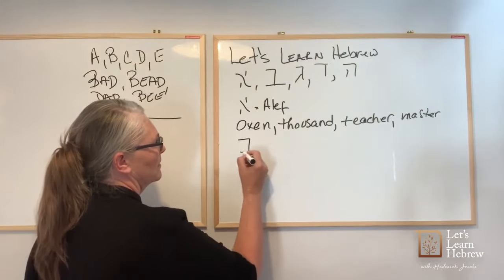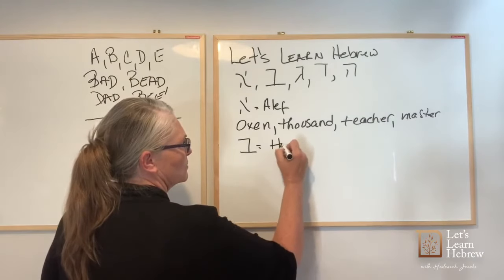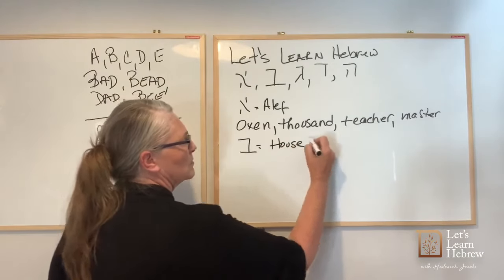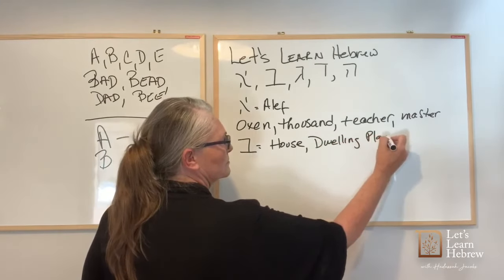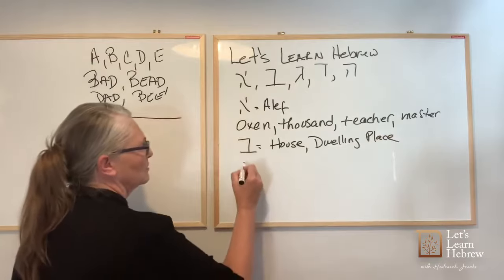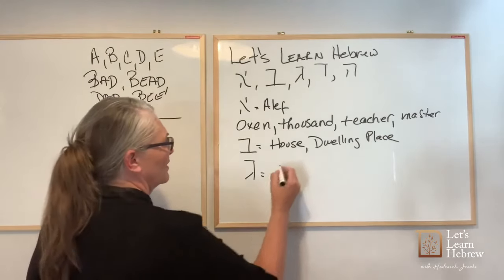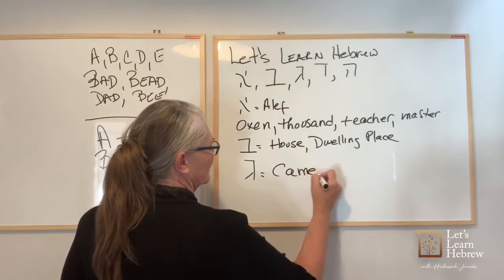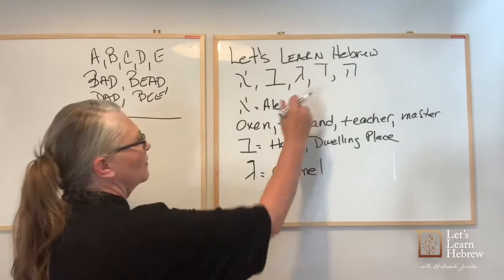All right, then we have Beetz. Beetz means house, dwelling place. And we have Gimel. Gimel actually has to do with a camel. It's like a camel. All right, then we have Dalet.